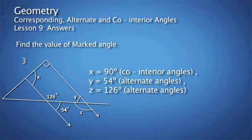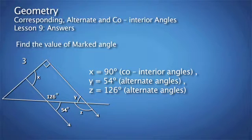Question 3. Find the value of each angle. The value of X is 90 degrees — we can see that from the diagram. The value of Y is 54 degrees; the reason is alternate angles. And the value of Z is 126 degrees.